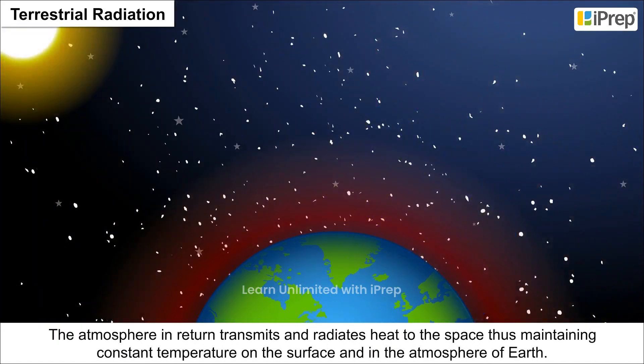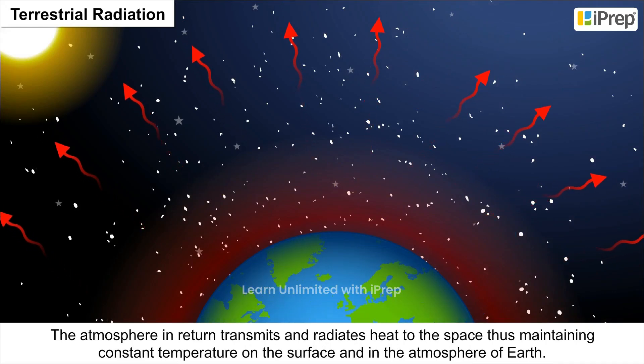The atmosphere in return transmits and radiates heat to the space thus maintaining constant temperature on the surface and in the atmosphere of Earth.